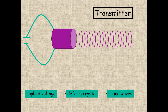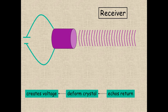First, the crystal acts as a transmitter. A voltage is applied intermittently to the crystal, which intermittently deforms it, causing it to vibrate, and this produces ultrasound waves. Then the crystal acts as a receiver — it's not transmitting sound. Returning echoes from deeper tissues deform the crystal, which creates a voltage across the crystal, which is processed to give a return.